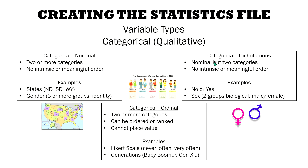When you have a categorical variable that's dichotomous, that means it's nominal but there are only two categories. So if you look at sex — male or female — that would be considered a dichotomous variable because there are two. Yes or no, two categories — either yes or no — could also be considered dichotomous.